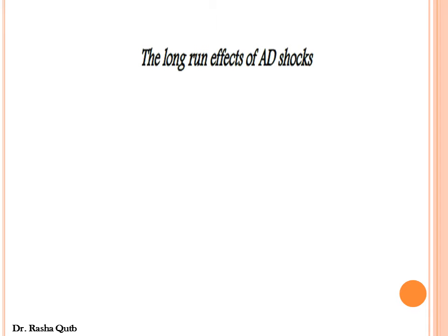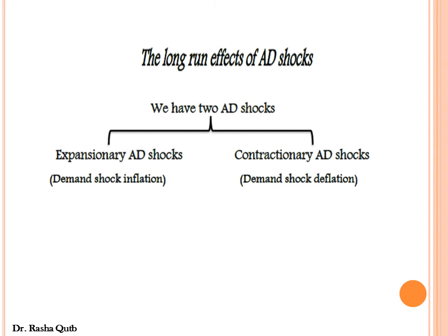Let's start with the long run effects of aggregate demand shocks. We have two types of shocks: either expansionary aggregate demand shocks, which we can call demand shock inflation, or contractionary aggregate demand shocks, which we can call negative aggregate demand shocks or demand shock deflation.